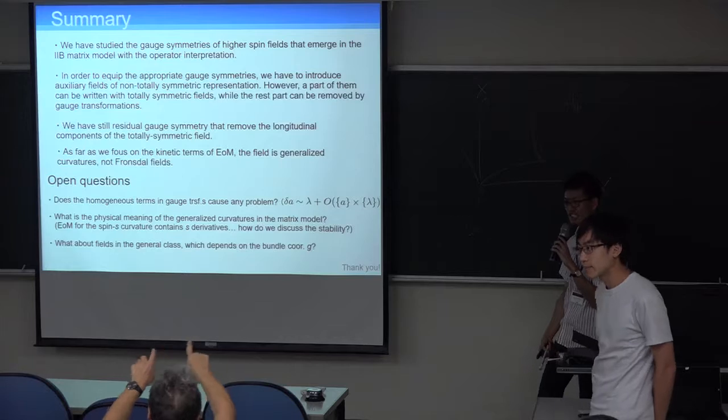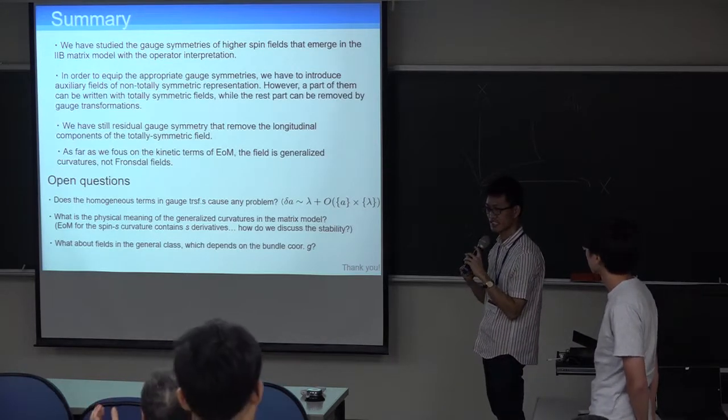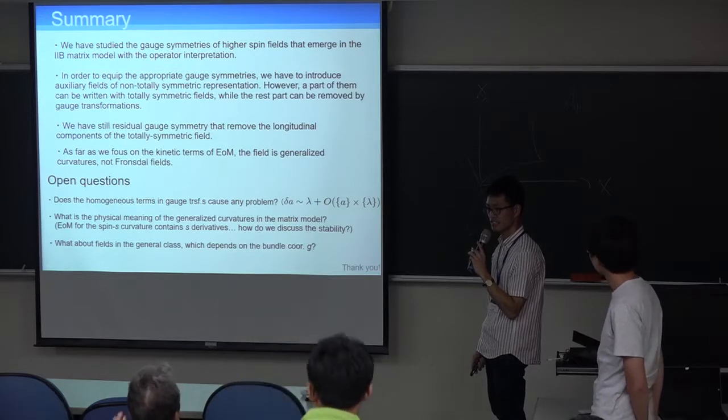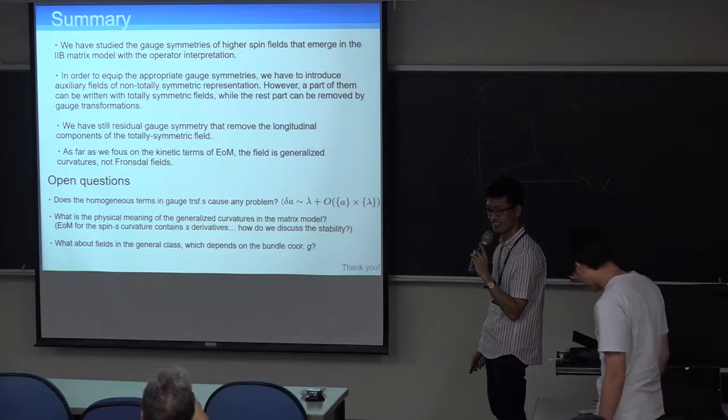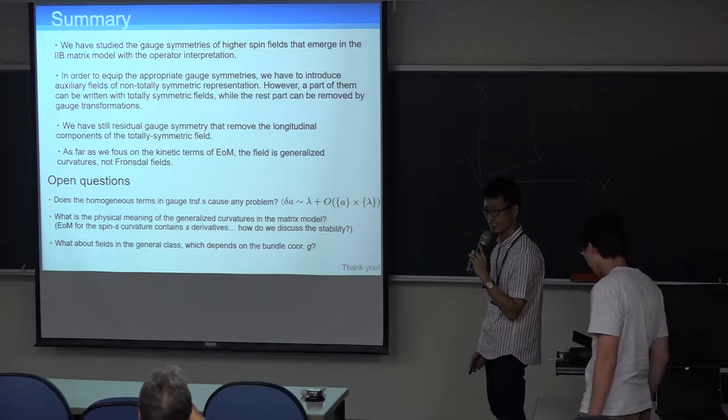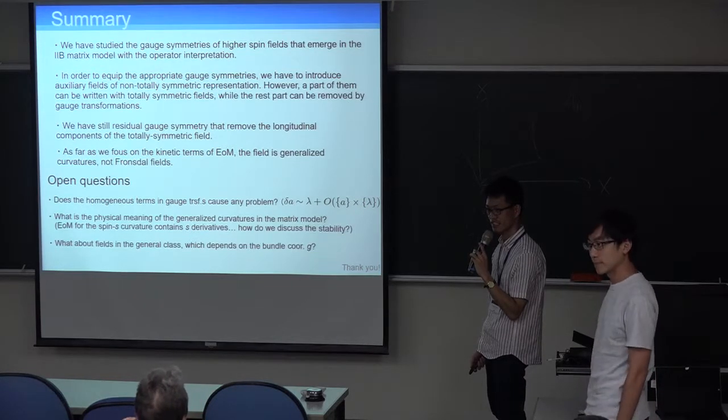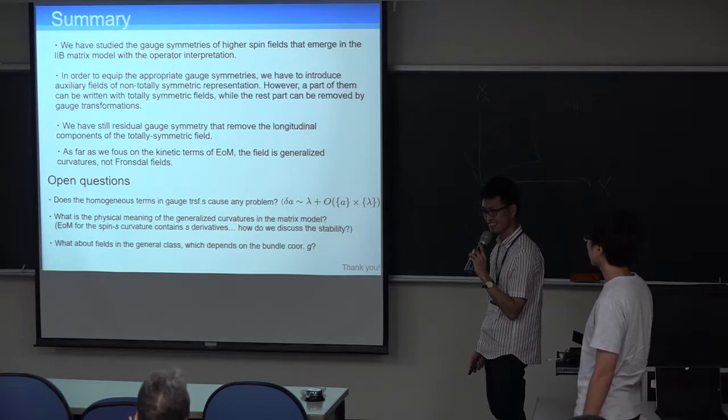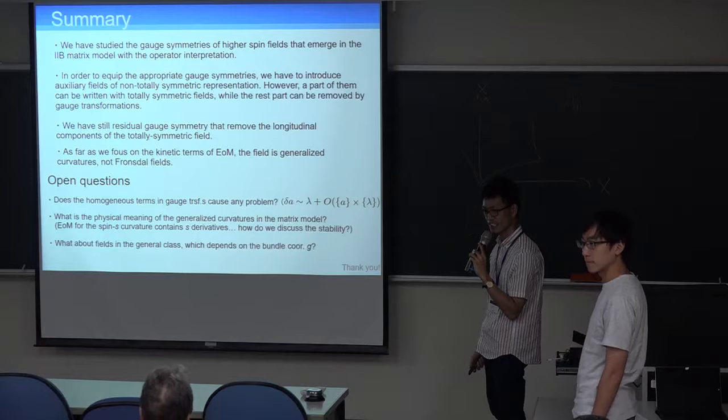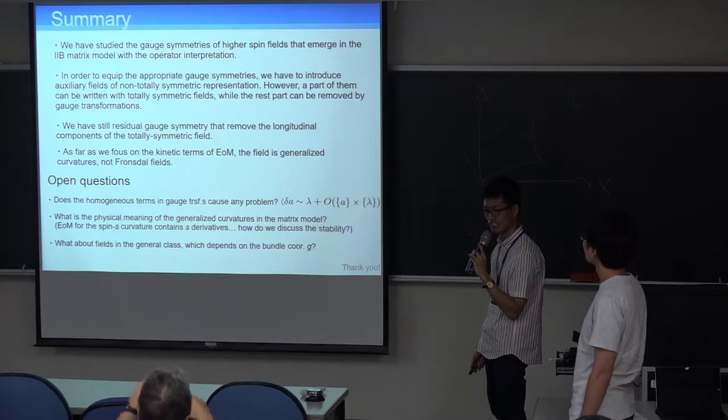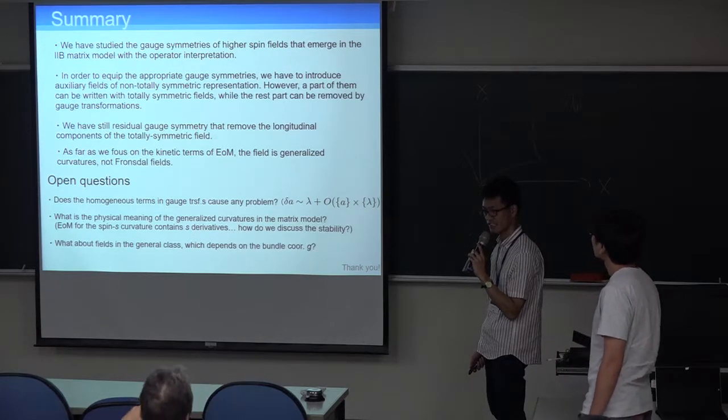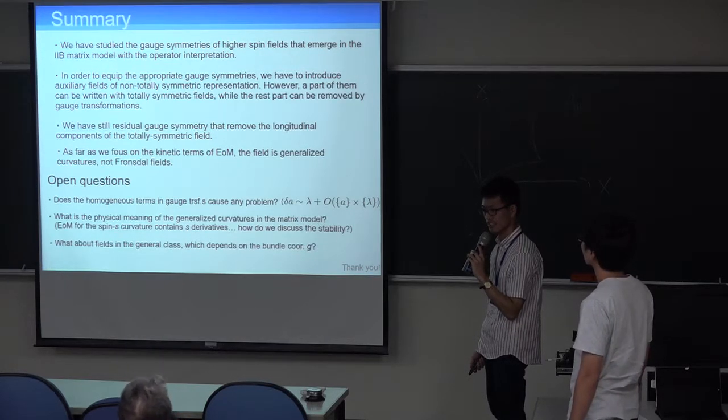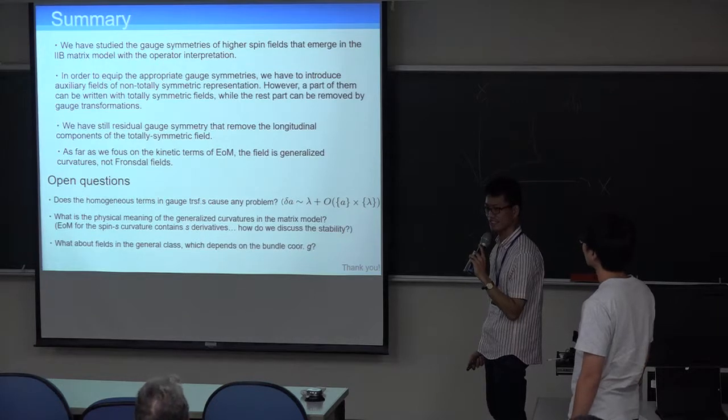I was a bit confused in the first part of your talk, because the gauge symmetries are well-defined in your framework, so there is nothing you can do about it. And then you introduced some auxiliary fields, but then you removed them again. So in the end of the day, the statement is that in the original framework, you can remove all the longitudinal degrees of freedom in the sector that you considered. So is that true or not? Or did you add something extra? I was confused by adding extra degrees of freedom. Are they there?